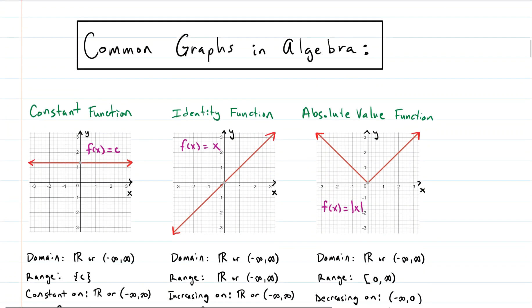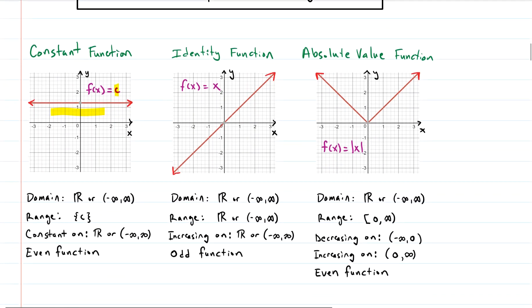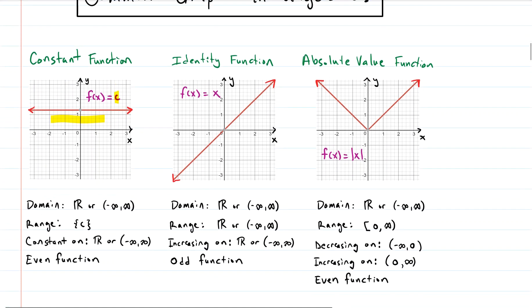Here are the seven most common graphs you'll see in algebra. First one is just the horizontal line — they call it the constant function. Y equals some constant C. That constant could be 5, it could be negative 2, whatever you want. I also have listed below a bunch of information about each of these function types. The identity function is just a diagonal. Every point on the line is the same, meaning the x and y coordinates are identical: 1,1; 2,2; 3,3; negative 1, negative 1. That's why it's called the identity function.